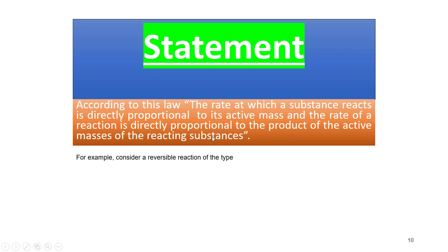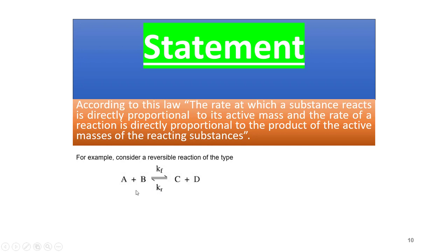Now you are able to understand the definition of the Law of Mass Action. Let's take an example of a reversible reaction: A + B react to form C and D. Here A and B are the reactants and C and D are the products. With the help of a double-headed arrow, you can observe it is a reversible reaction. Here KF is the proportionality constant for the forward reaction and KR is the proportionality constant for the reverse reaction.